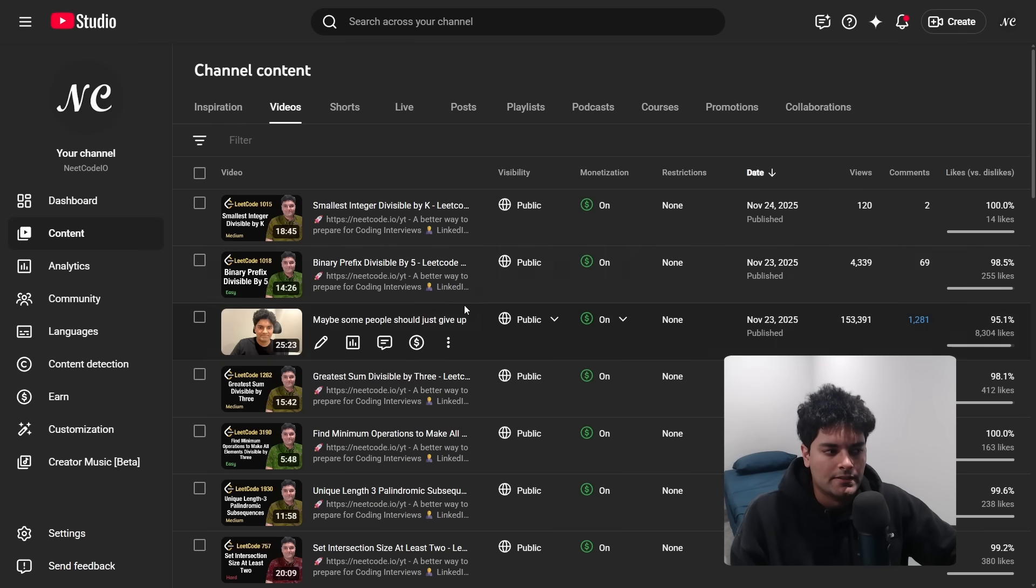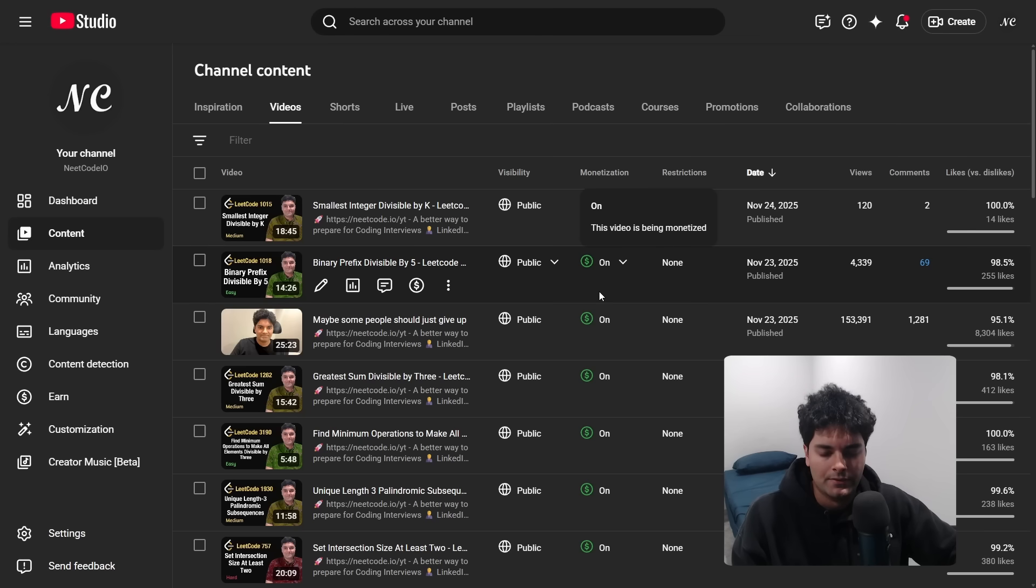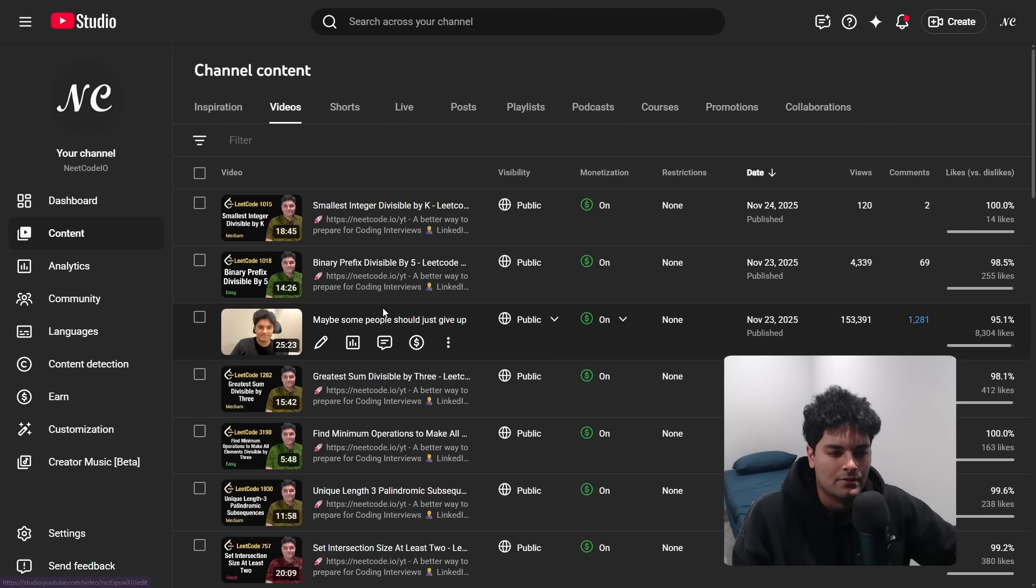So I made a video yesterday titled Maybe Some People Should Just Give Up, and I admit I went really hard in that video. I probably could have been a lot nicer, but I think some people misunderstood what I was trying to say. YouTube doesn't really show you the dislike count on a video anymore, so I'll show it to you. It's only 5%, which was honestly surprising to me. I'm surprised by how many people agreed, and for that reason I'm glad I made the video.